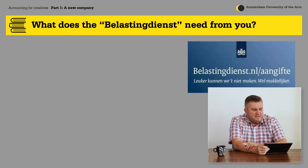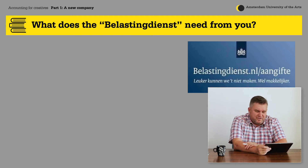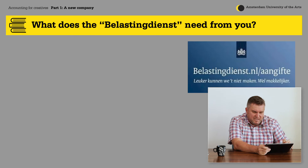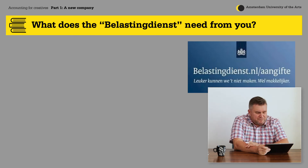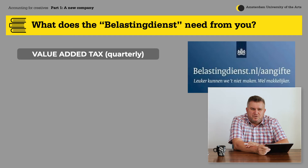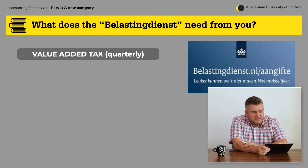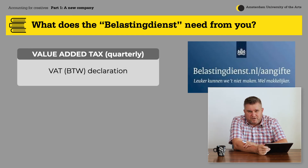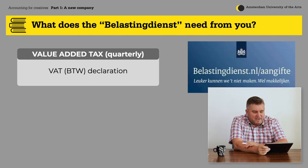Let's have a look at the Belastingdienst, because that's probably the first thing you think of when you do your bookkeeping. The Dutch tax authorities will need some reports. The first one is to make sure that you can do your value-added tax — in Dutch we call this BTW. It's a declaration you have to do each quarter, reporting what value-added tax you need to pay.